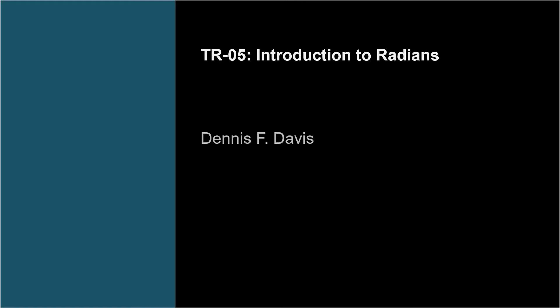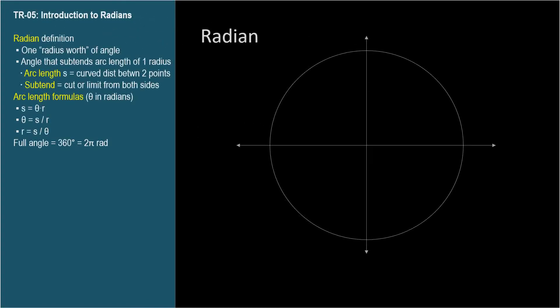There's another unit of measure for angles besides degrees, called a radian. It's commonly used by engineers, mathematicians, and scientists when using graphs of trigonometric equations, which we'll get to later in this series.